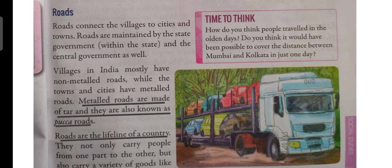Villages in India mostly have non-metal roads, while towns and cities have metal roads. Metal roads are made of tar and are also known as pakka roads. Villages have kaccha roads, which are made up of mud, while towns and cities have pakka roads made up of coal tar.